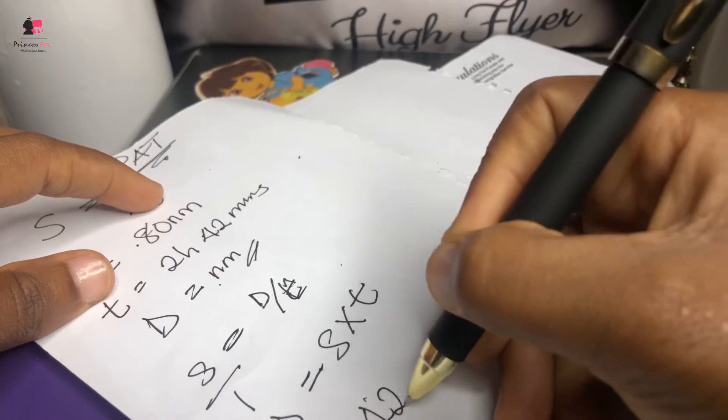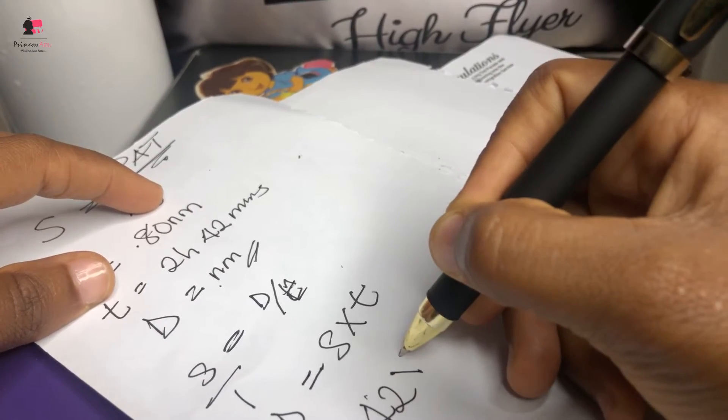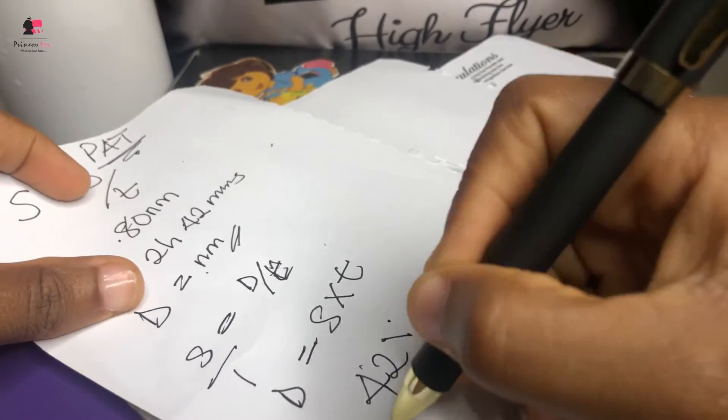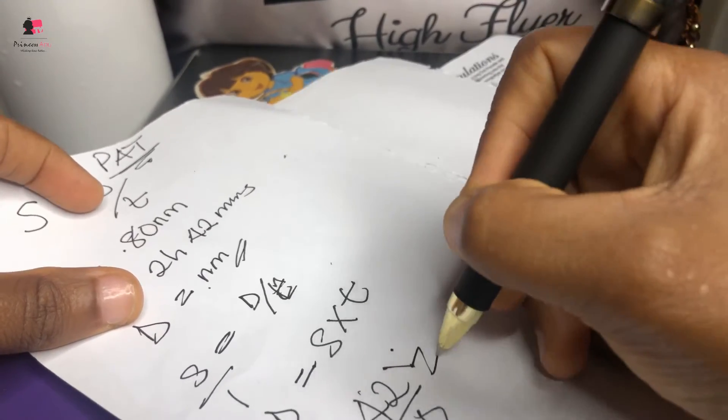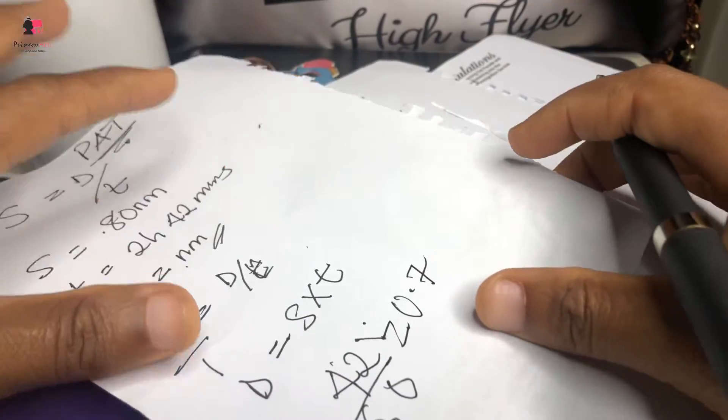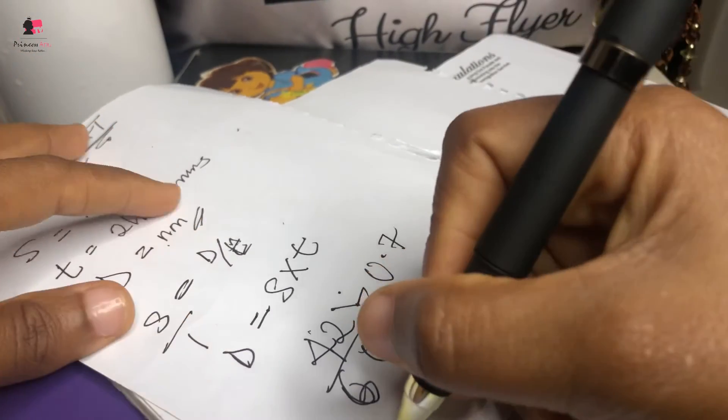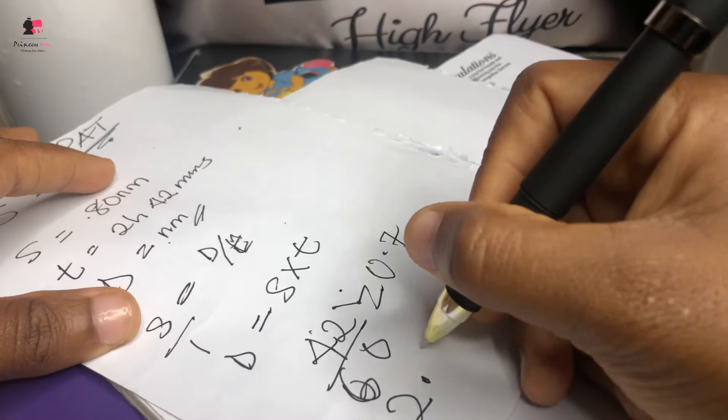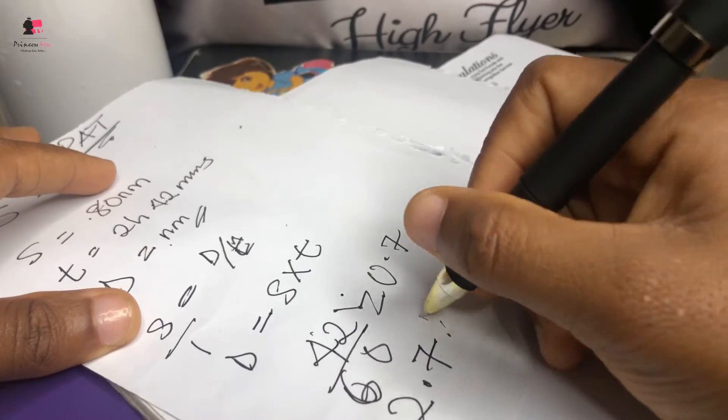you put 42 divided by 60, which will give you a minute. And this should be giving you 0.7. So in total, you're going to be having 2.7. This is the hours.